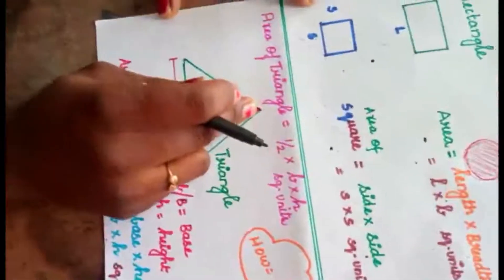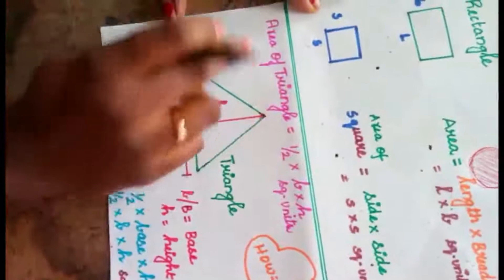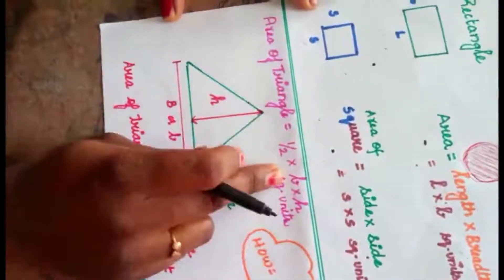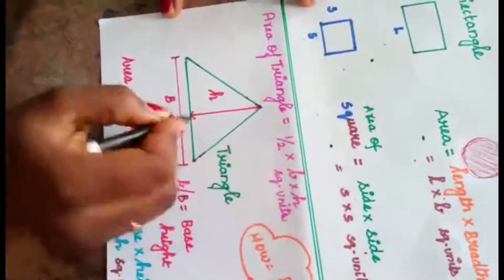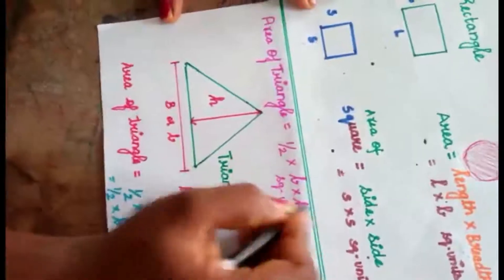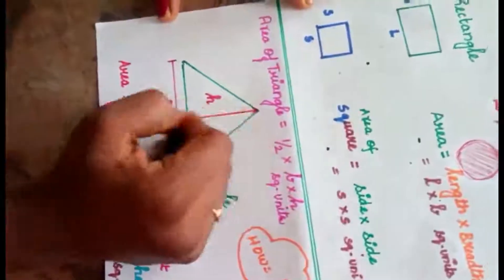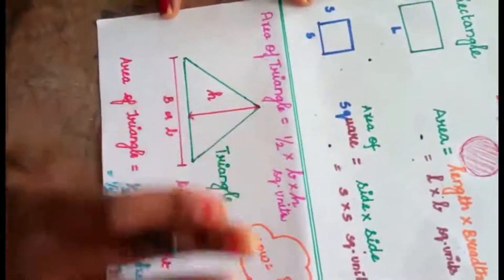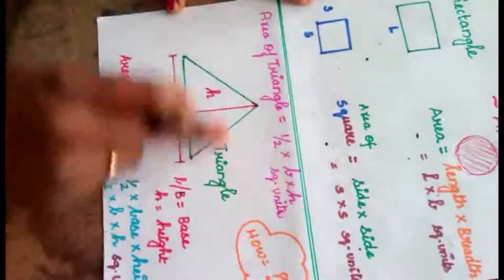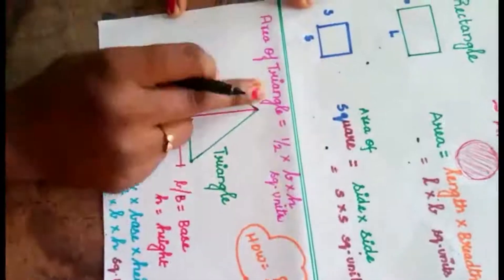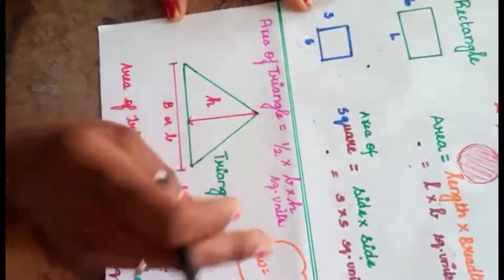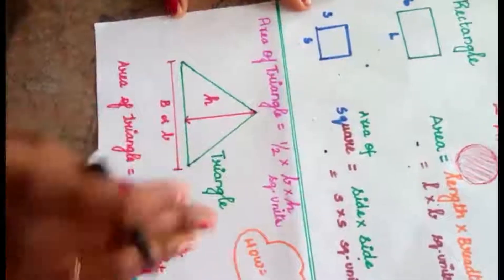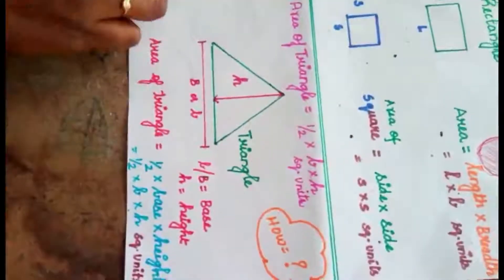Coming to area of triangle: area of triangle is half into B into H, where B is the base of a triangle and H is the height of a triangle. In this video we are going to see why the area of triangle is half into base into height, with the help of a small activity.